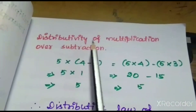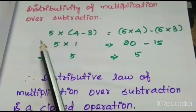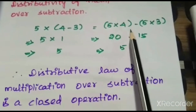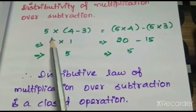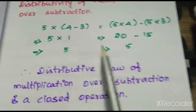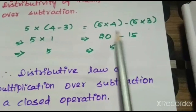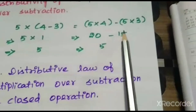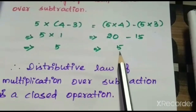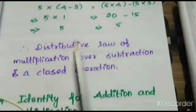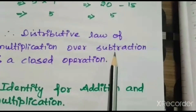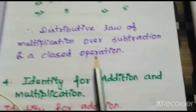Next, distributivity of multiplication over subtraction. For example, 5 into (4 minus 3) equals 5 into 4 minus 5 into 3. First way: 4 minus 3 equals 1, and 5 into 1 equals 5. Second way: 5 into 4 is 20, and 5 into 3 is 15, giving 20 minus 15 equals 5. Both answers are the same, so the distributive law of multiplication over subtraction is also confirmed.